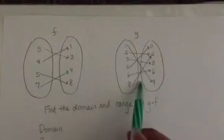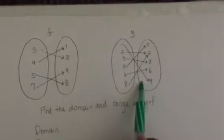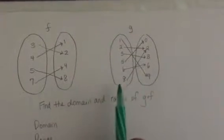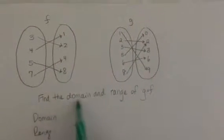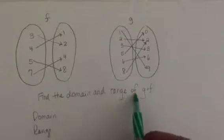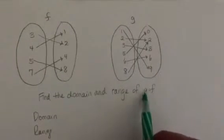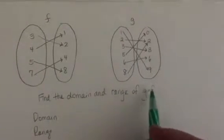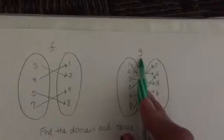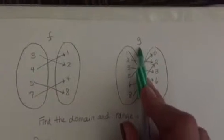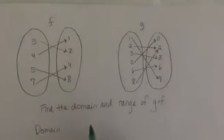They give you all these sets. I copied this one from the Alex homework, but it wants the domain and the range of g of f. So this is function f and this is function g, and luckily they put them in the right order.